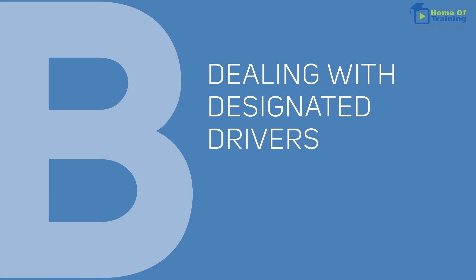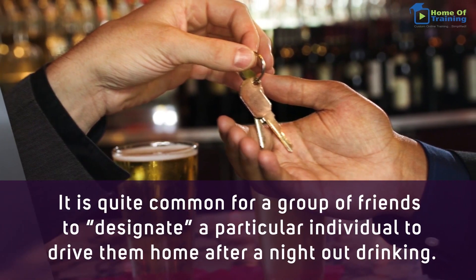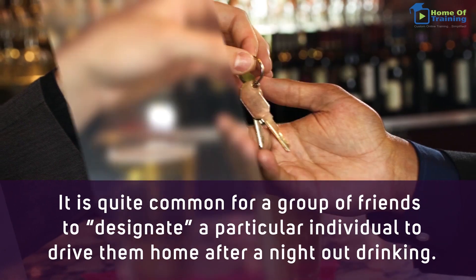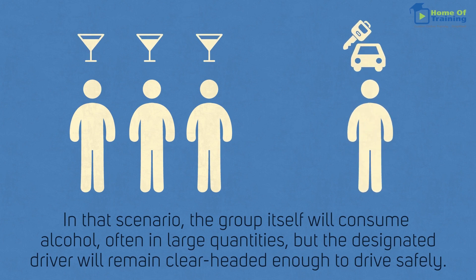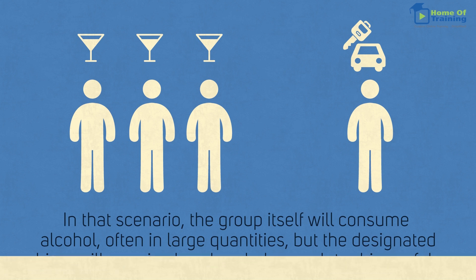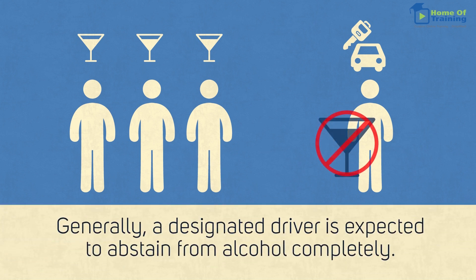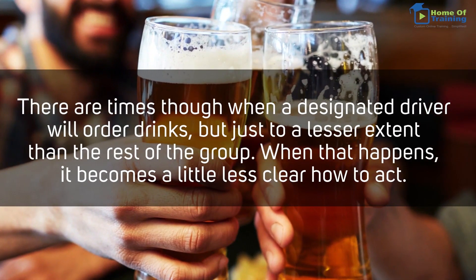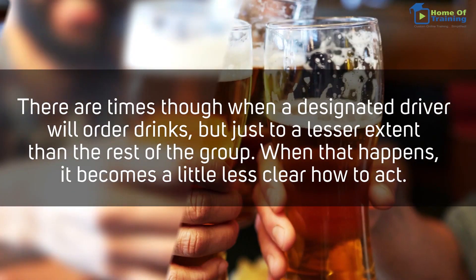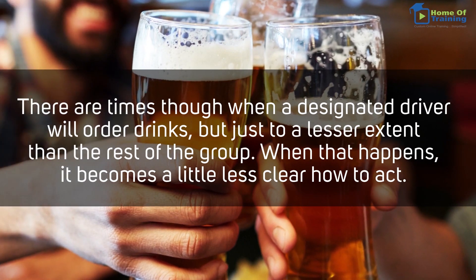Dealing with designated drivers. It is quite common for a group of friends to designate a particular individual to drive them home after a night out drinking. In that scenario, the group itself will consume alcohol, often in large quantities, but the designated driver will remain clear-headed enough to drive safely. Generally, a designated driver is expected to abstain from alcohol completely. There are times, though, when a designated driver will order drinks, but just to a lesser extent than the rest of the group. When that happens, it becomes a little less clear how to act.